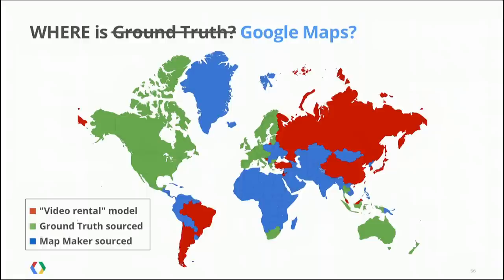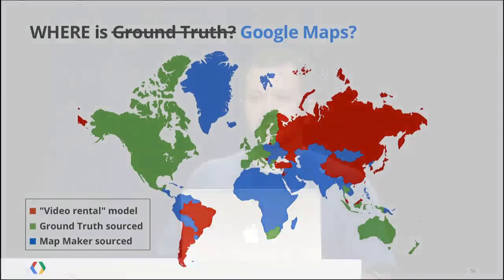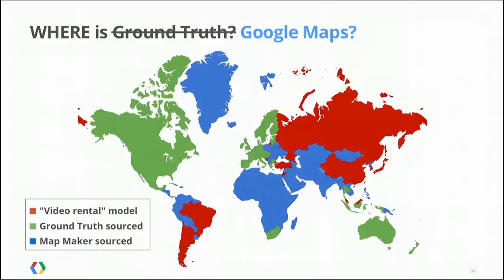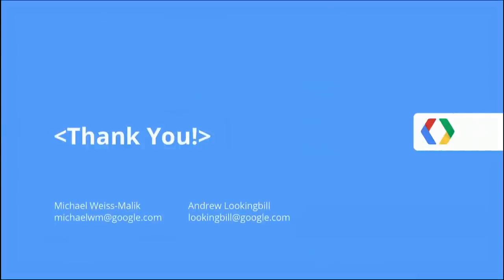All of that amounts to a map of the world. Google has, as of recently, 200 countries mapped around the world — we finally got North Korea mapped. The video rental model is still in play in quite a number of countries and is an important model for us. Ground Truth has launched in 43 countries and regions, most recently Thailand and Indonesia just a few weeks ago. The blue countries are completely Map Maker sourced — users are the ones generating the map and we're providing the platform. Many Ground Truth countries also have Map Maker launched, so in the US, UK, and others, you can directly edit the data. That's all we have for today — thank you for coming, and we're happy to take questions.